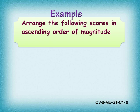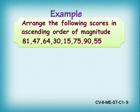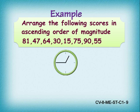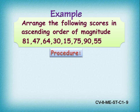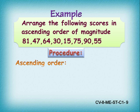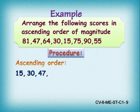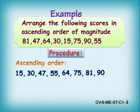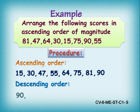Here is an example: arrange the following scores in ascending order of magnitude — 81, 47, 64, 30, 15, 75, 90, 55. Ascending means from smaller magnitude to larger magnitude. The answer is: 15, 30, 47, 55, 64, 75, 81, and 90. If arranged in descending order — from larger to smaller magnitude — the order is reversed: 90, 81, 75, 64, 55, 47, 30.